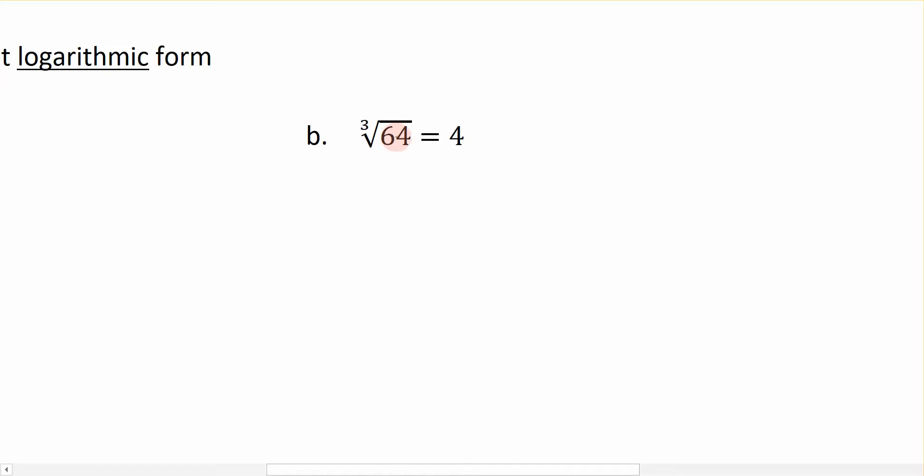Hopefully you remember that to do that, I start with what's under the radical sign. That's 64. And I raise it to a fractional power. The fraction comes from, the numerator comes from the power underneath here. What is 64 raised to? An understood 1. So that's the numerator of my fraction. And the denominator is the index of my radicals. So in this case, 3. So the cubed root of 64 is the same as 64 raised to the 1/3 power.